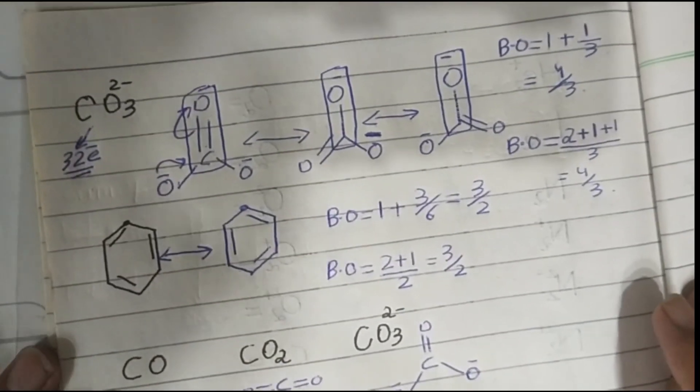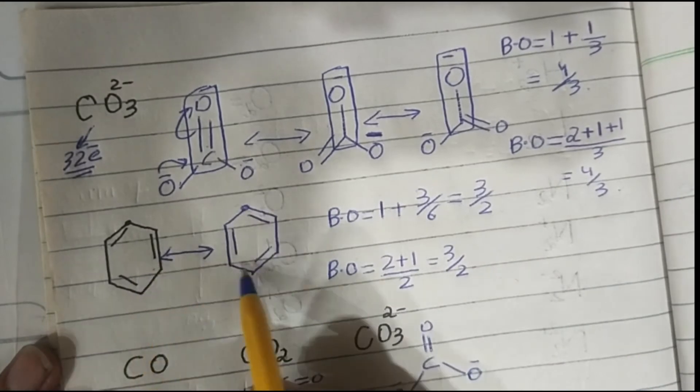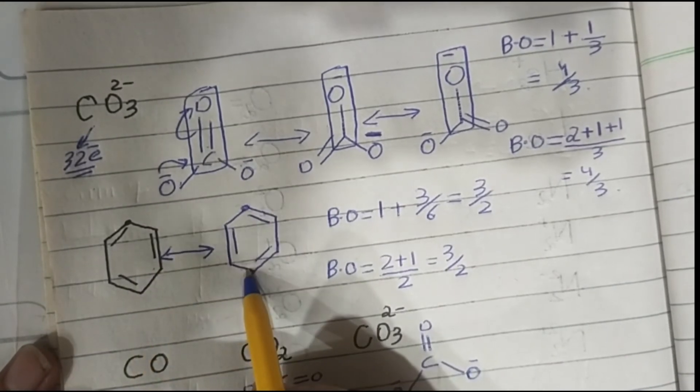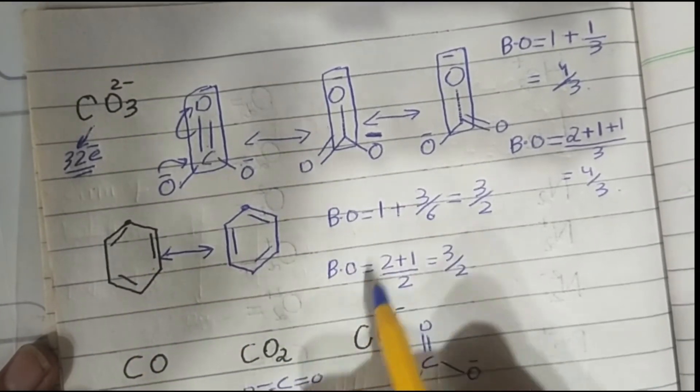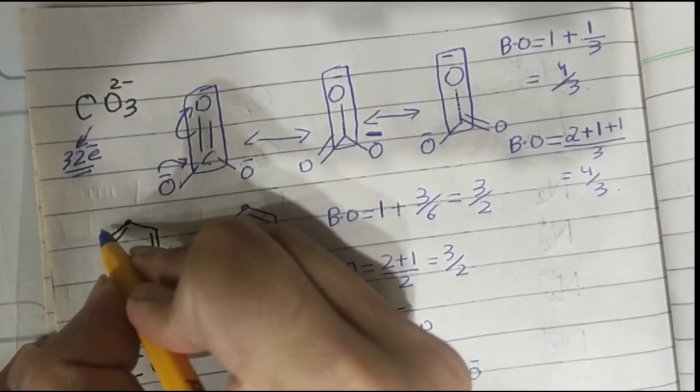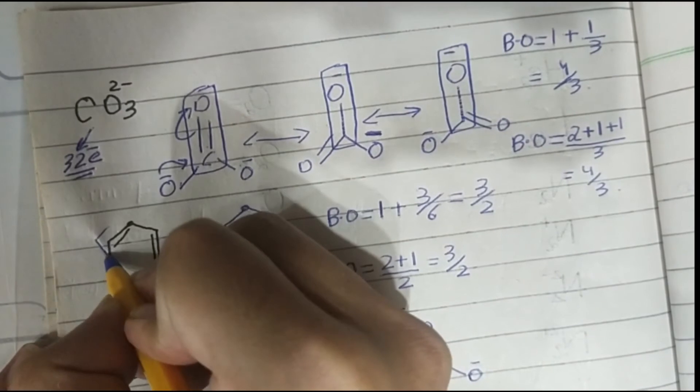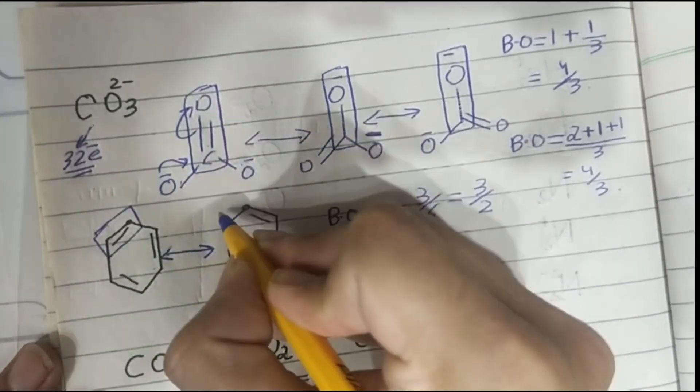Benzene — here is its resonating structure. Bond order is equal to the number of bonds between any two atoms in all resonating structures divided by the total number of resonating structures.